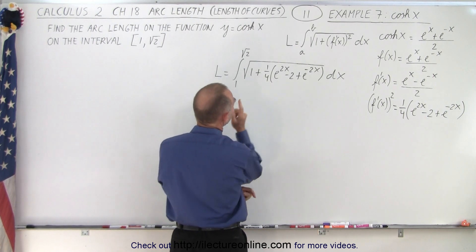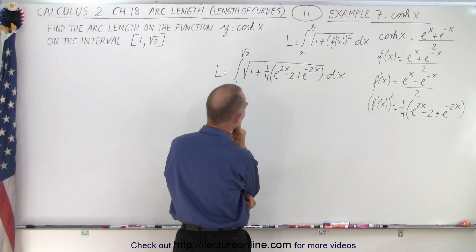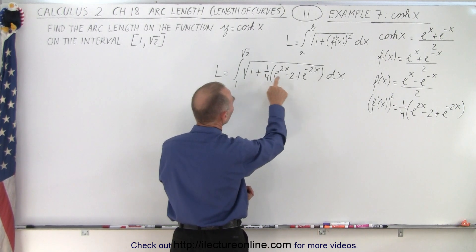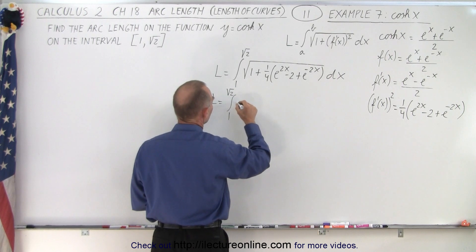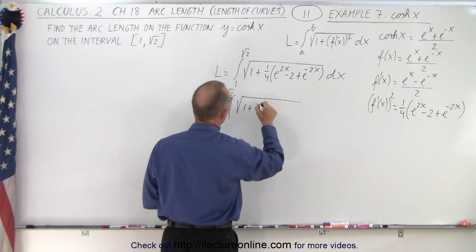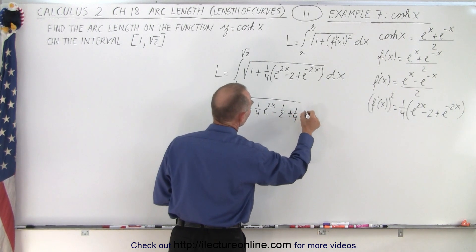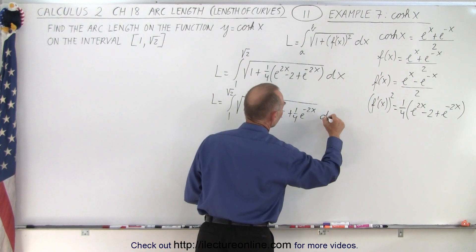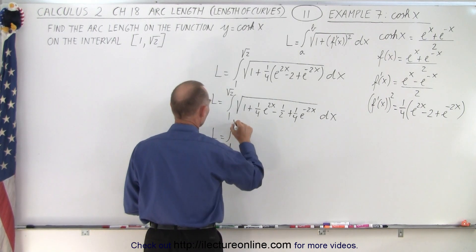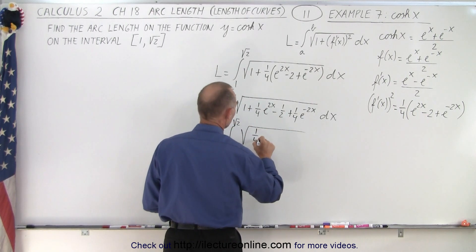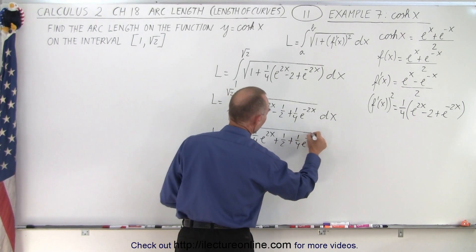Notice what we can do — we multiply through the 1 fourth. So we get L equal to the integral from 1 to the square root of 2 of the square root of 1 plus 1 quarter e to the 2x minus 1 half plus 1 quarter e to the minus 2x, times dx. There's a reason we're doing that — we can add the 1 to the negative 1 half, which becomes a positive 1 half. So now we have the square root of 1 quarter e to the 2x plus 1 half plus 1 quarter e to the minus 2x.